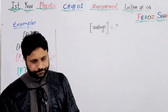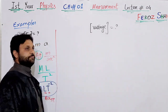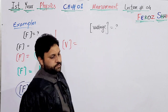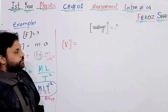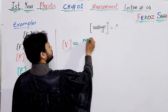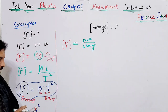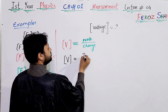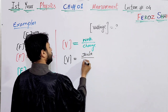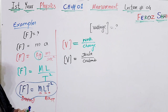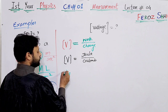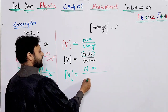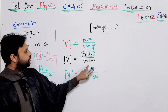Now let me find the dimensions of voltage. Step one: put voltage in square brackets. Step two: use the equation — voltage equals work per unit charge. Step three: convert the right-side quantities into units. The unit of work is joule and the unit of charge is coulomb. Step four: convert to base units — joule equals Newton times meter, and coulomb equals ampere times second.